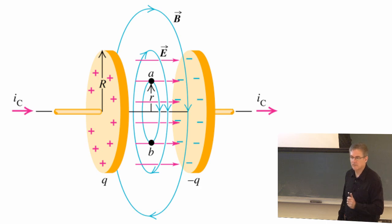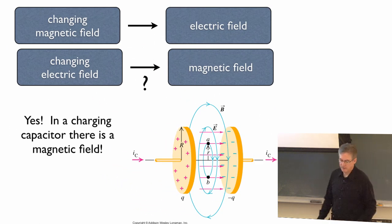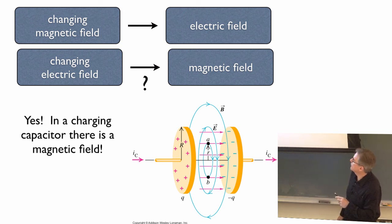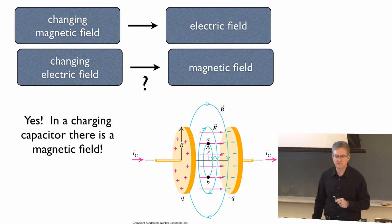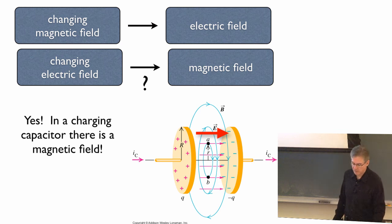So yes, in fact, when you do work out the physics, a time varying electric field gives you a magnetic field. Also note that the direction of the magnetic field is perpendicular to the electric field lines everywhere inside here. Anywhere you would go, if the electric field points like that, magnetic field lines are perpendicular to it.